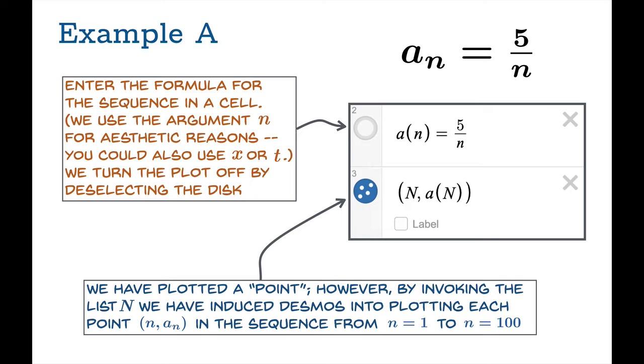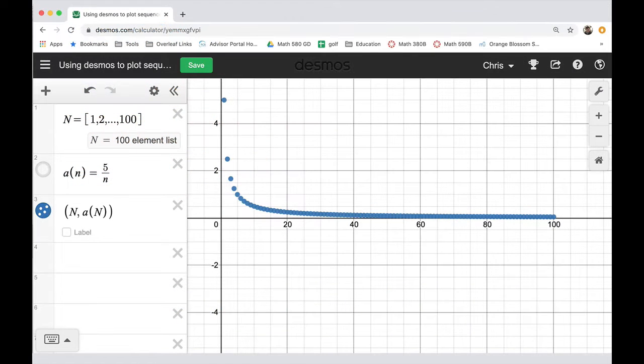So this ostensibly is the command to plot a point—the point (n, a(n))—but since capital N was entered as a list, this command induces Desmos to plot a hundred points. It'll substitute the various values in that list, and recall they were 1, 2, 3 all the way up to 100, so this is going to plot a hundred different points using the formula a(n) for the value.